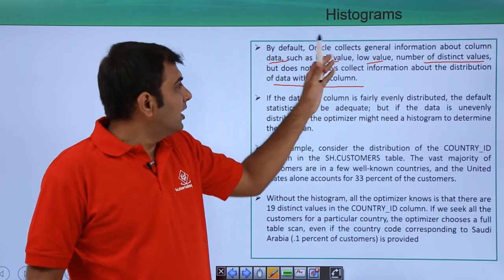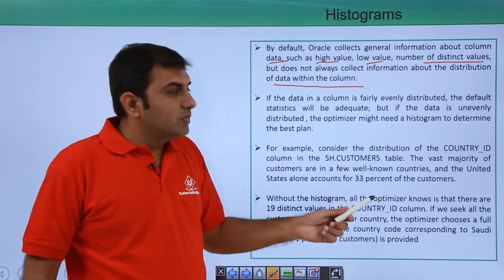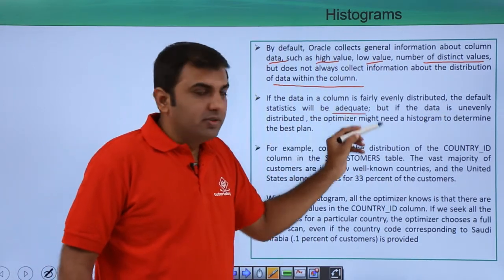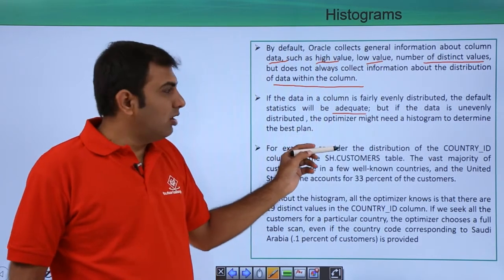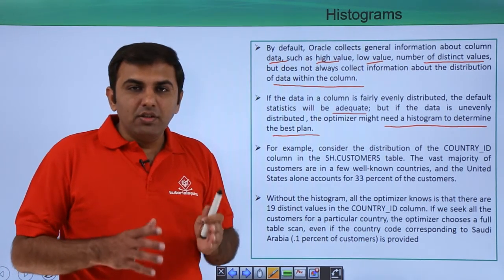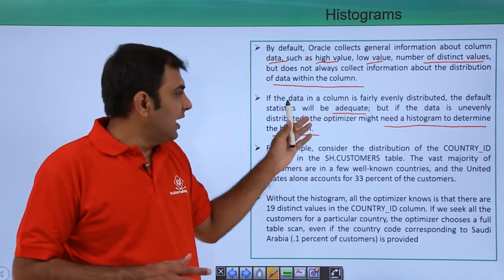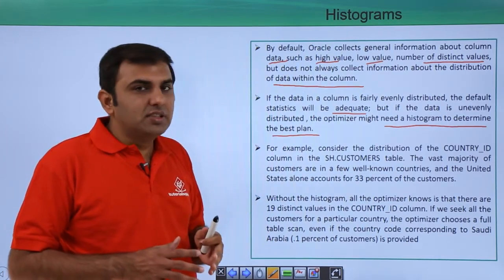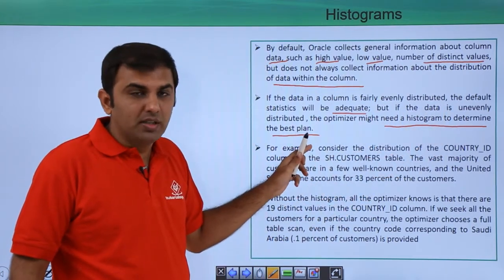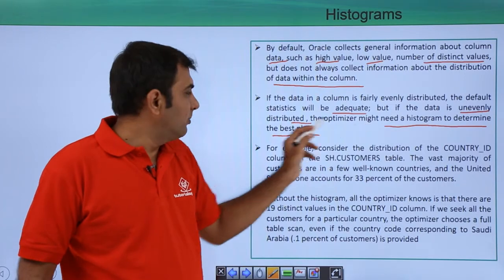This distribution information is not collected by default - Oracle collects the high value, low value, and number of distinct values. If the data in the column is fairly evenly distributed, the default statistics will be adequate. But if the data is unevenly distributed, the optimizer might need a Histogram to determine the best execution plan.